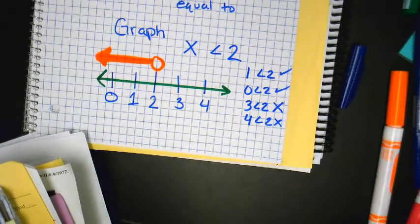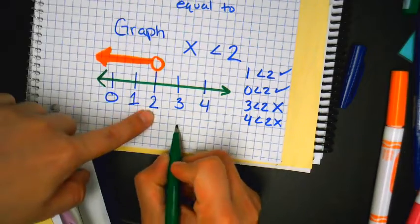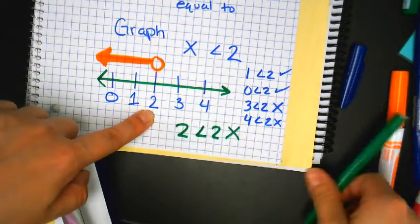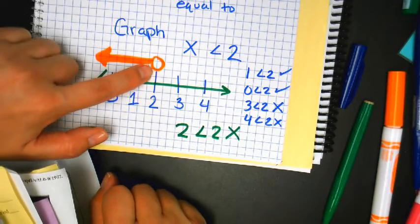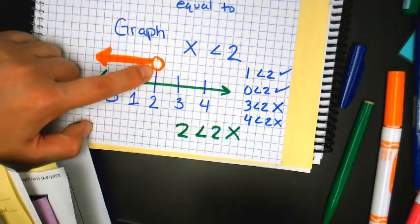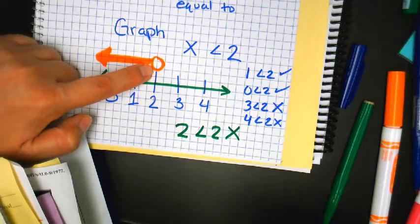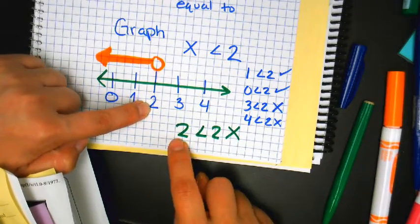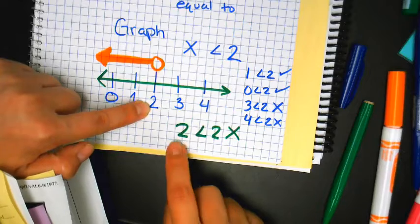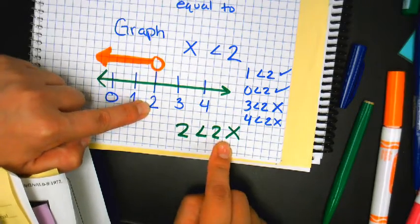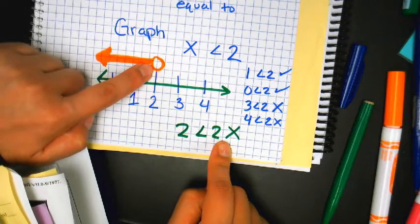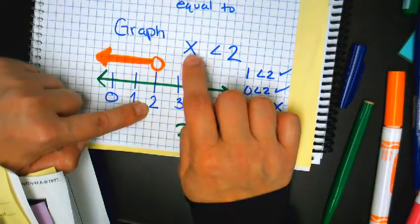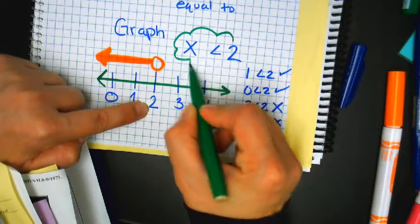Here's the open and closed circle explained. Is 2 less than 2? No — it's equal. So that's why we don't shade it. The circle is like a placeholder. If it were shaded, that means that number is a possible solution. But 2 is not less than 2, it's equal to. So that's why it's an open circle — the 2 does not satisfy this inequality.